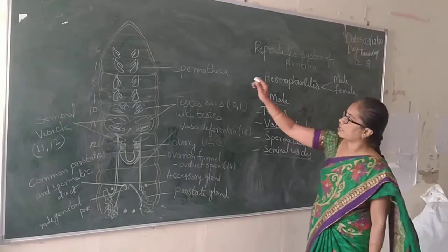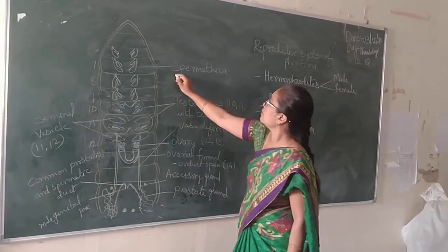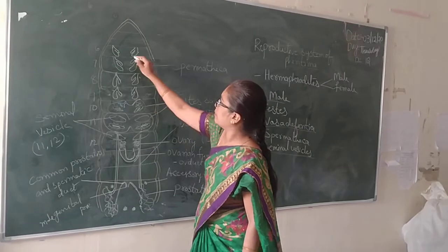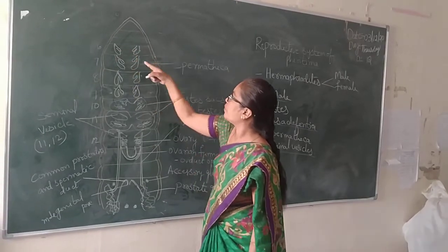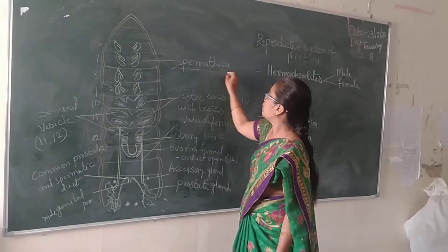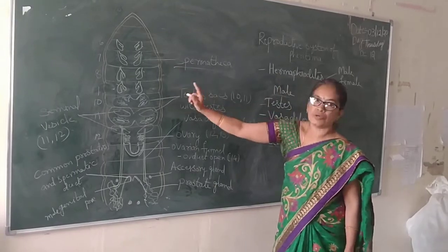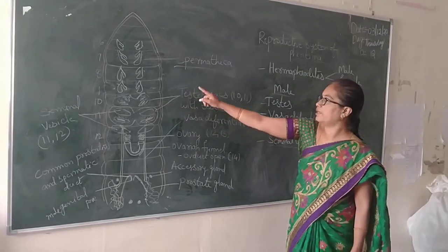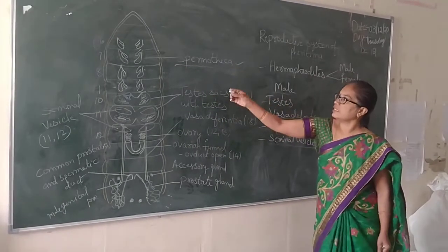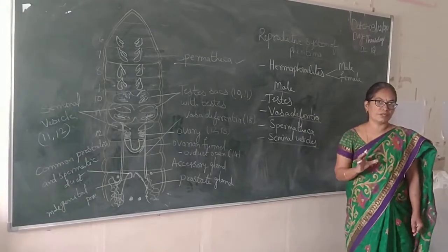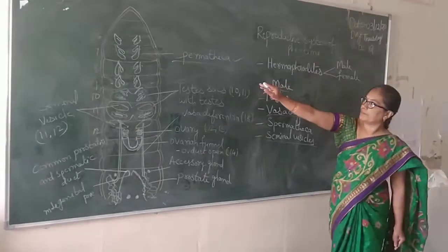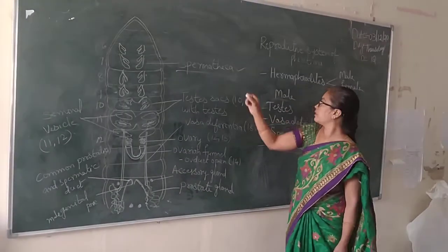Spermatheka are present in the 6th to 9th segments. Four pairs of Spermatheka are present from the 6th to 9th segment. Their function is to store the spermatozoa.